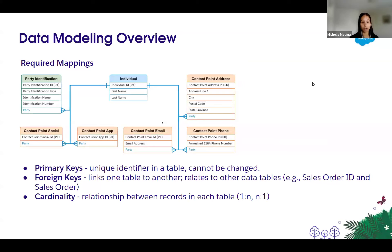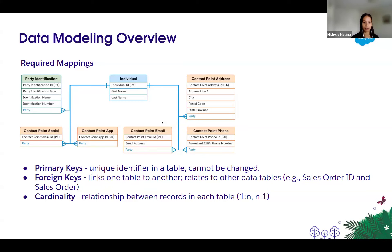For any implementation and for our use case, there are a few data model objects we need to be familiar with. These objects are important for the unification and configuring that identity resolution. You'll see in the middle the individual object, along with some of those attribute objects like the contact point address, contact point phone, email, app, and social. The individual object represents a person.